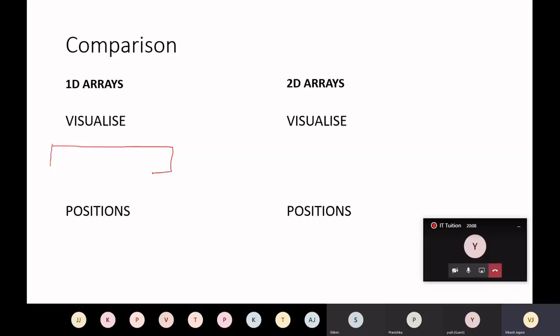This is a typical one-dimensional array. Let's put down 1, 2, 3, 5 cells. Let's give this a name, ARR1D. So that's a one-dimensional array. We can have values in here: 10, 80, 90, 60, 20. And we know that there are positions, position 1, position 2, 3, 4, and position 5.